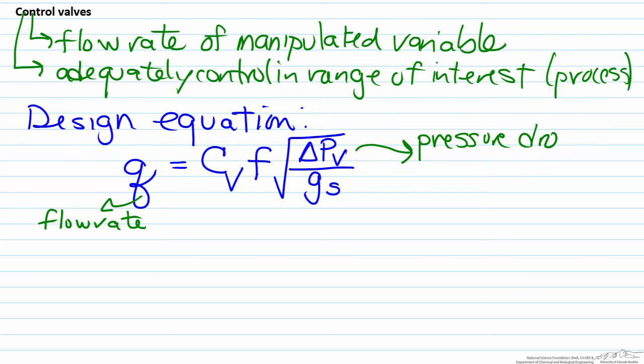Delta PV represents the pressure drop. It's not the entire pressure drop across the entire process. This is the pressure drop across the valve only, and this can become important as you are trying to appropriately size a valve. Gs represents the specific gravity.